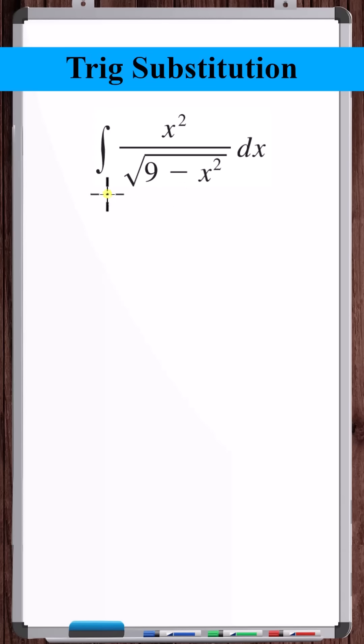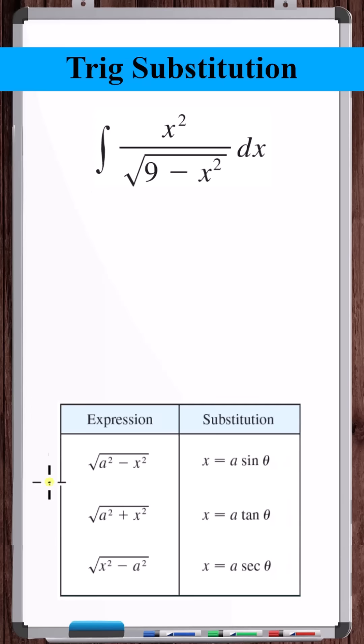In particular, trig substitutions are very useful if that expression is under a square root. There are three options for a trig substitution.